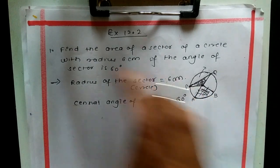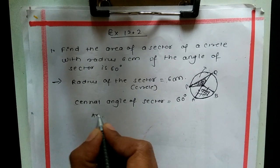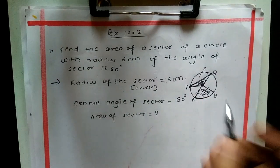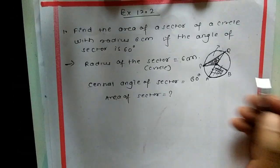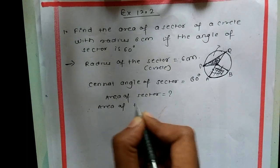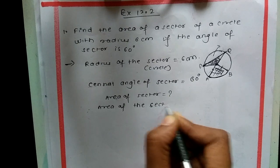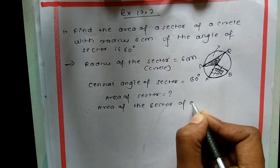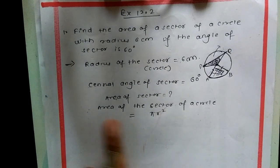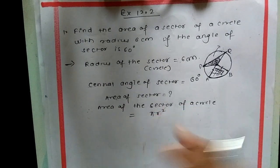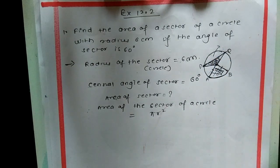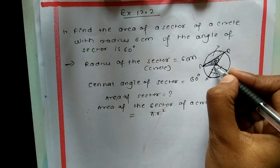Now find the area of sector. The formula is the area of circle, πr², because a sector is a piece of the circle. But here we have the extra component: the angle of sector.